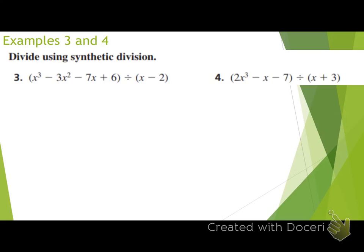Number 4: 2x cubed minus x minus 7 divided by x plus 3. Go ahead and try this one on your own as well. Raise your hand if you can list the coefficients of our dividend: 2, 0, negative 1, and negative 7. Very good. We need to account for that x squared term, just like we did yesterday with our long division, so we just use a 0 as its coefficient.